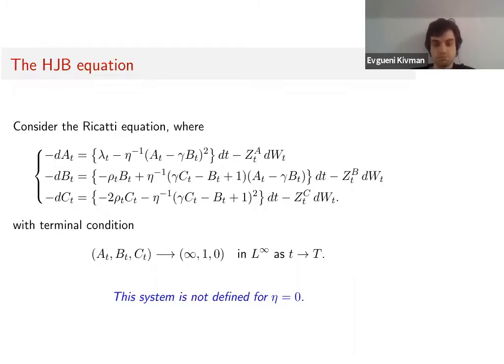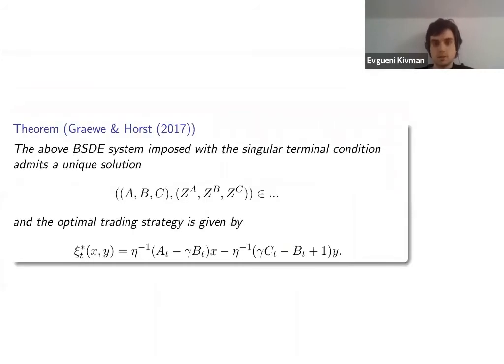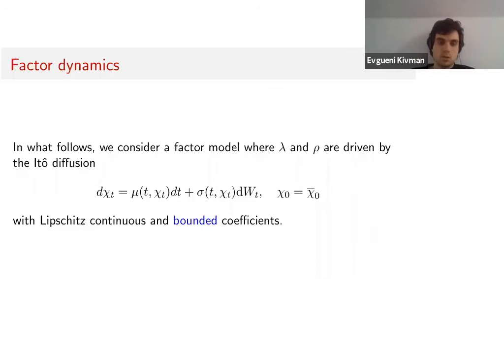We have to make another approach, but first I just recall how we get to the solution in the original model. This is the theorem which summarizes this: the BSDE system imposed with a singular terminal condition has a unique solution A, B, and C, and the optimal trading strategy is given by this term. If we solve this equation, we have the optimal trading rate.